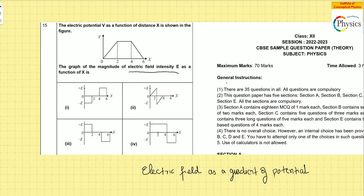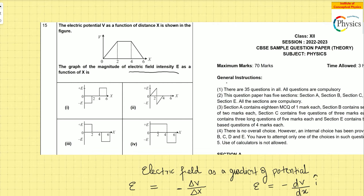A lot of questions in board examinations and entrance examinations are based on this topic. What it means is that electric field can be written as the change in voltage divided by the distance across which the voltage is being measured. For example, measuring it in the x-axis direction — but put a negative in front. This is written as: electric field equals minus dV/dx, in the i-direction.